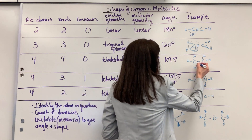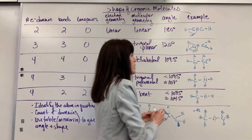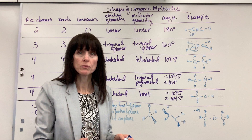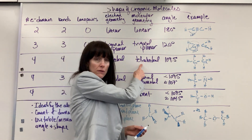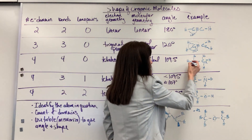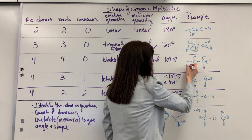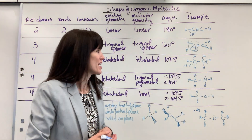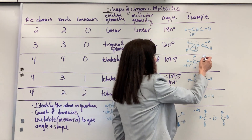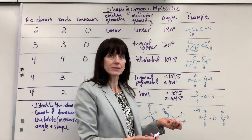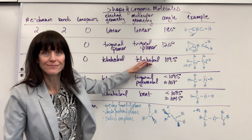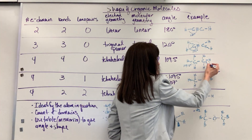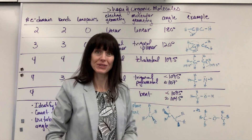Let's count electron domains for carbon one and carbon two. Carbon one has four electron domains, all bonds, no lone pairs — so it's going to be called tetrahedral, and the angle between those hydrogens is 109.5 degrees. It's because it goes three-dimensional. Carbon two likewise has four electron domains, all bonds — tetrahedral at 109.5 degrees.